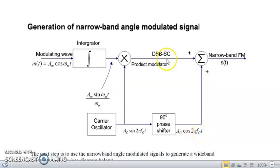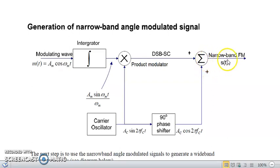The two sidebands from the product modulator and the carrier signal from the carrier oscillator via the phase shifter are now combined. The double sidebands — upper and lower — are added with the carrier signal, and we get the narrowband FM output, which contains only the upper sideband, lower sideband, and carrier frequency.